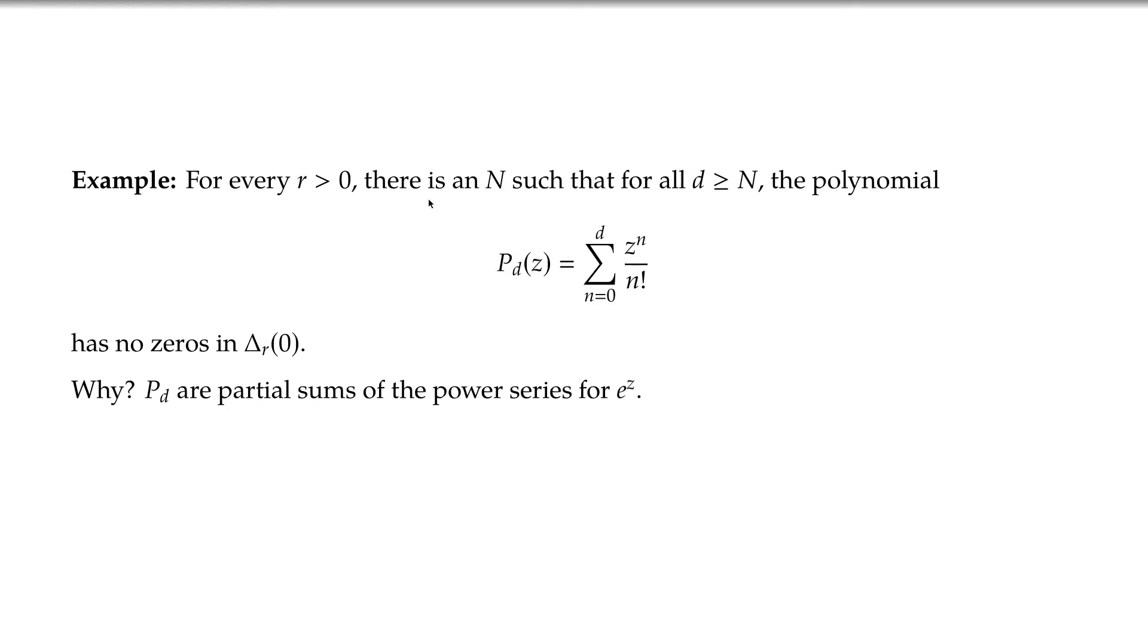I mean, normally you would say, well, this is a polynomial. It has d zeros in the complex plane. But it says that, given any disk, we can find a large enough d such that all those d zeros will be somewhere outside this disk.